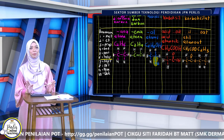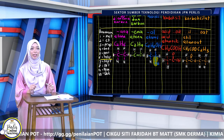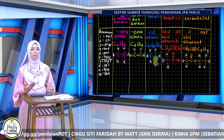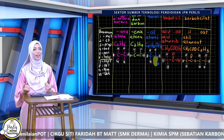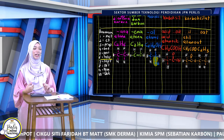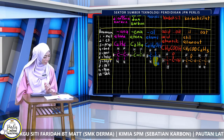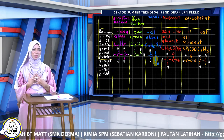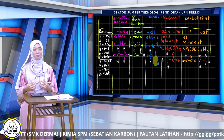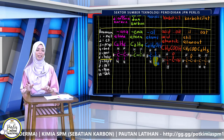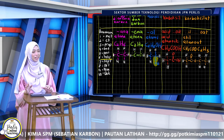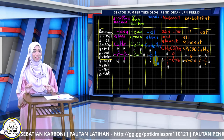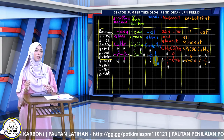Setiap siri homolog, penamaan dia ada prefiks iaitu awalan mengikut bilangan karbon: met, et, prop, but, pent. Mungkin kamu ada cara-cara kamu hafal. 'Mak Esa pergi beli petai ke?' Boleh kongsi dengan Cikgu di WhatsApp apa cara kamu hafal. Bila kita dah biasa, kita tak perlu pun ada cara nak hafal. Kalau ada cara yang kamu hafal, boleh kongsi di mesej Google Meet supaya orang lain pun dapat manfaat.